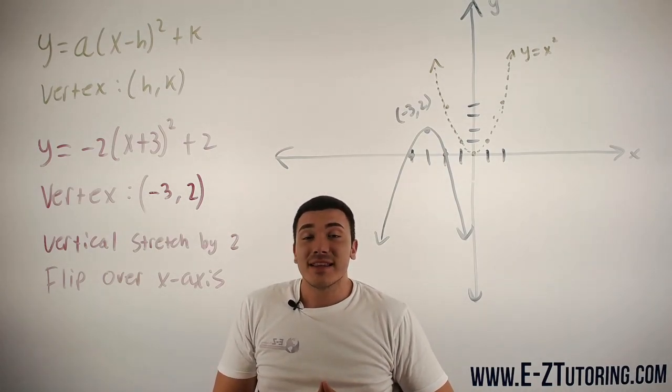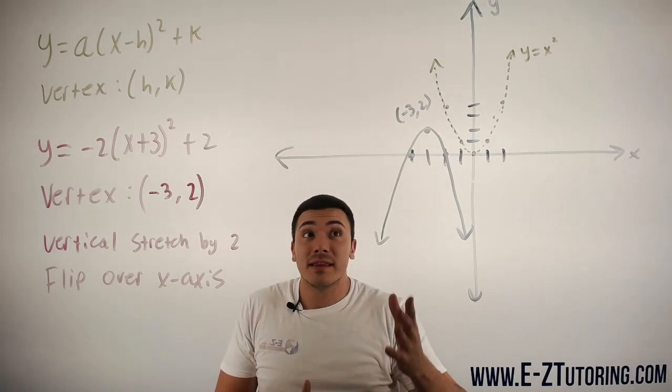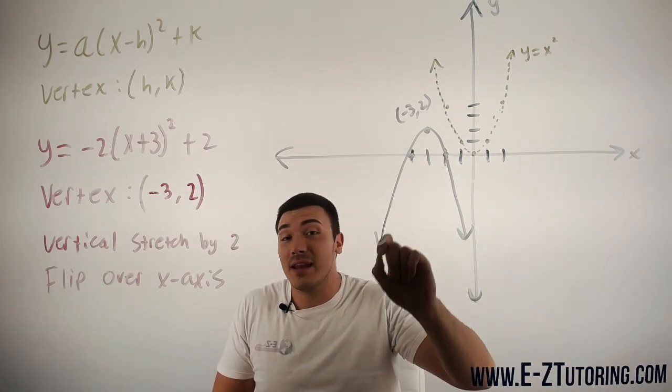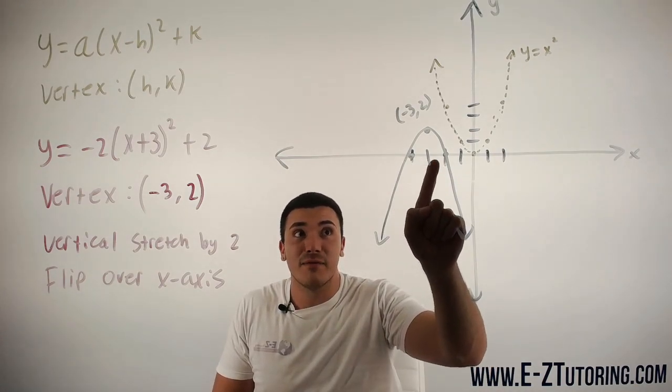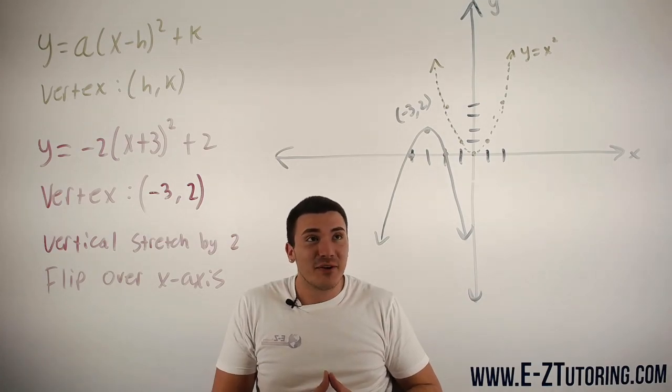Now, like I said, there are multiple ways to graph this. You can use the graph transformations method, you can simply plug in points, you could have made an x-y table and plugged in negative 4, negative 2. Either way, that is how you do it.